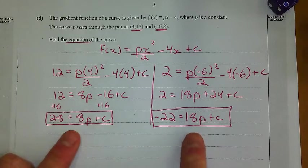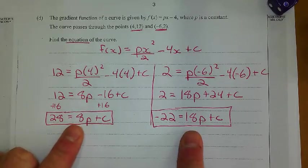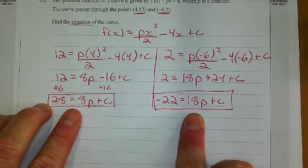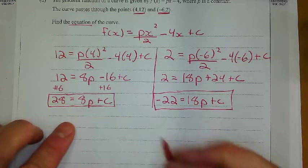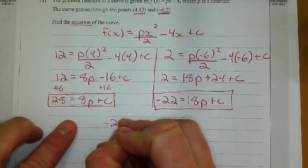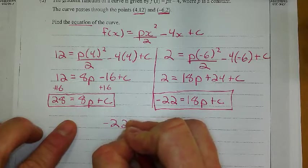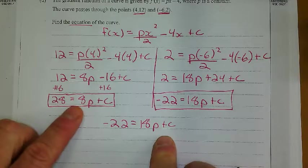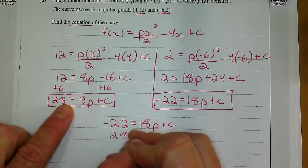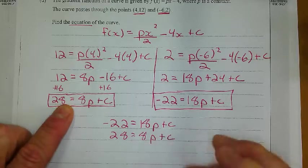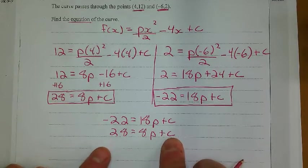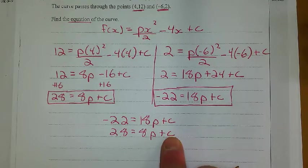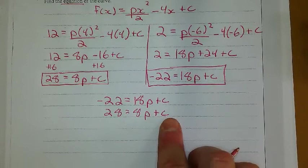So if we don't know by now, we've got simultaneous equations going on here. All right, I've got two equations with two variables, so I should be able to solve for p and c. So what I did, I just lined these equations up. I said negative 22 equals 18p plus c, and then I stuck this equation underneath it, and I said 28 equals 8p plus c. And I know that if I subtract this lower one from this top one, the c is going to cancel out there.